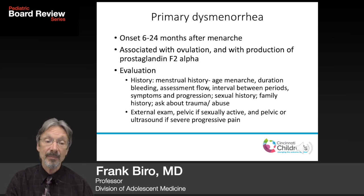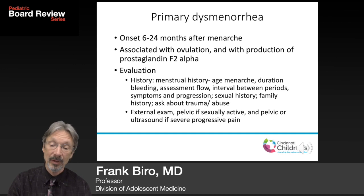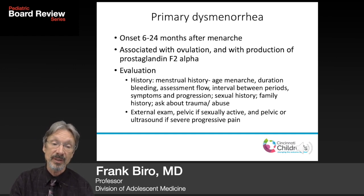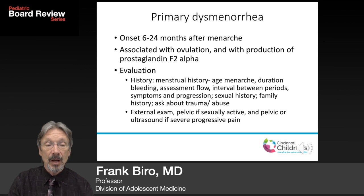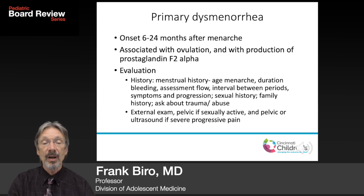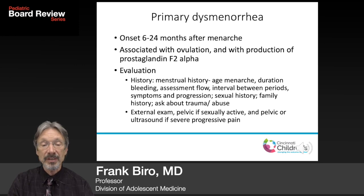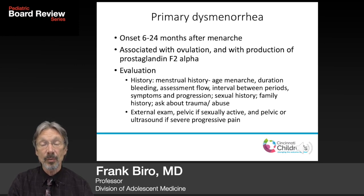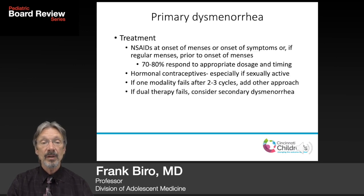You also want to ask about trauma and abuse, because young women sometimes present with dysmenorrhea after sexual abuse. Do an external examination. If the patient is sexually active, or if there is severe progressive pain, you should do a pelvic examination and/or an ultrasound to look for secondary etiologies.